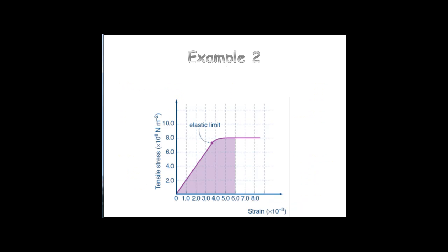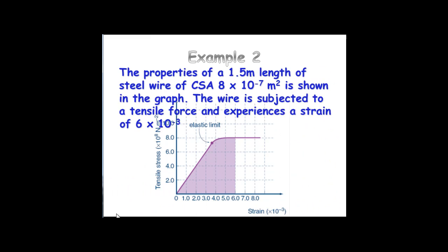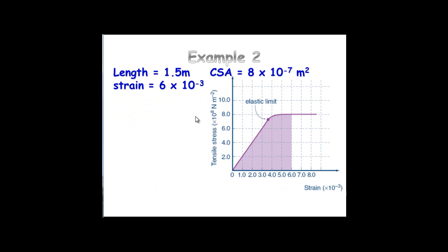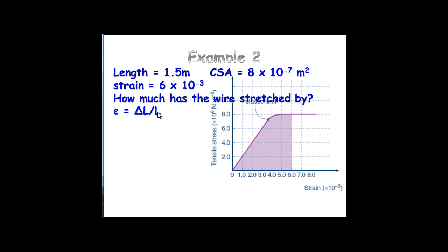Let's have a look at an example that undergoes plastic deformation. We're given dimensions of the object, the tensile force, and hence a shaded region on the graph. First question: how much has the wire stretched by? We're going to need to look at the strain. We know the original length and we know the strain, so substituting in and rearranging: 1.5 times 6 times 10 to the negative 3 gives us 9 times 10 to the negative 3 metres — that's 9 millimetres, or almost a centimetre.